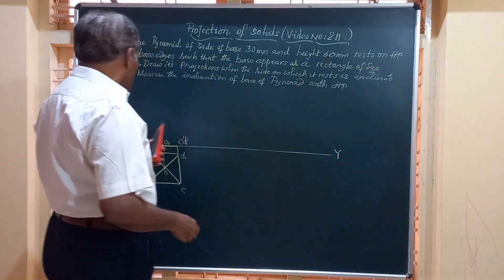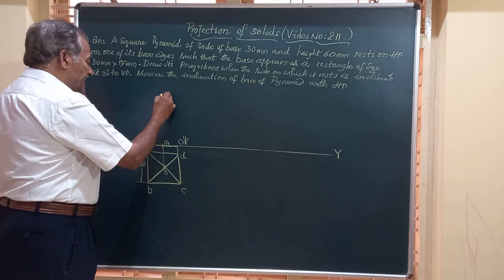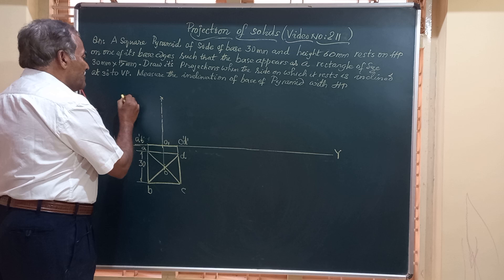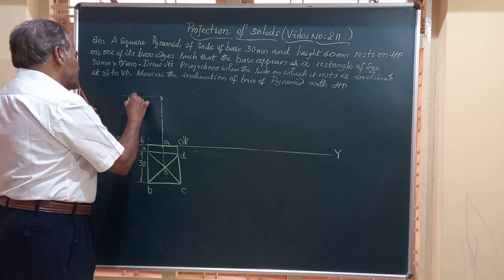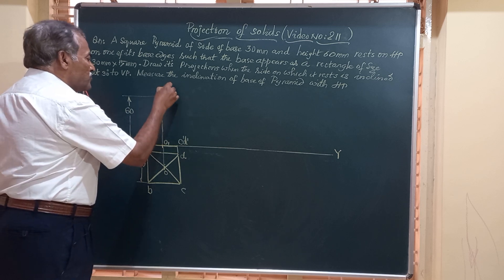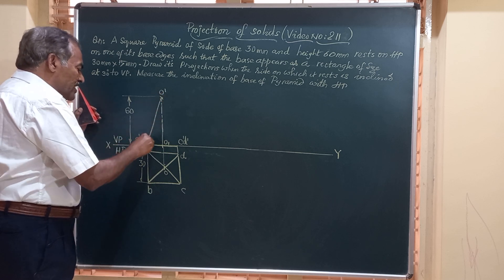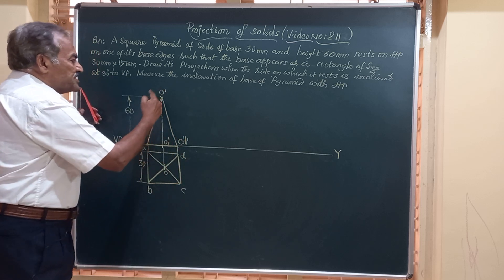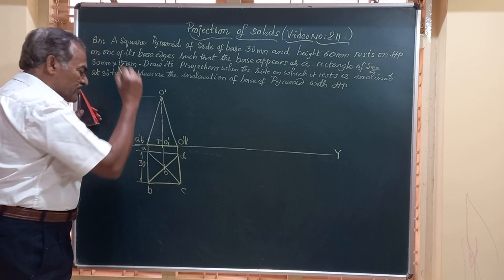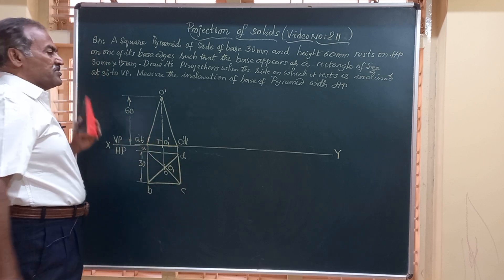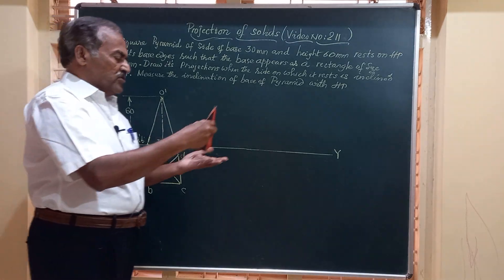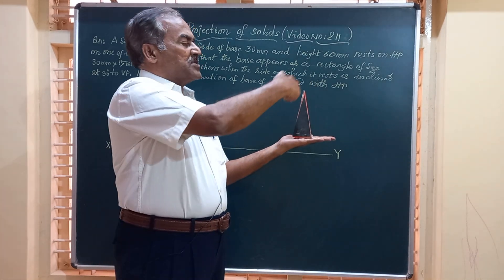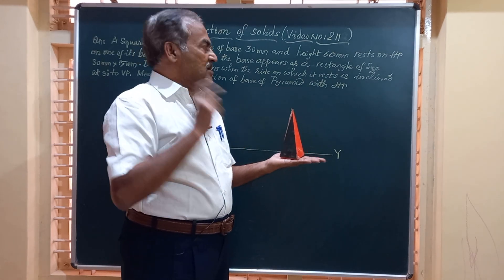To obtain the front view, we need the height. The height of the object is given as 60 mm. From the base I take a height of 60 mm, mark it, and join vertex O' to all four corners of the base: O'A', O'B', O'C', O'D'. The line O'O1' represents the axis of the solid, which is perpendicular to HP. We now have the front and top view when the pyramid is placed on HP with one of the base edges normal to VP — a square in the top view with the vertex joined to all corners.